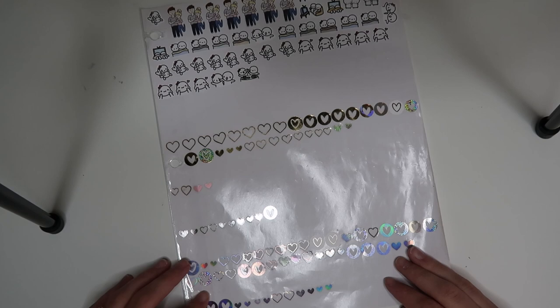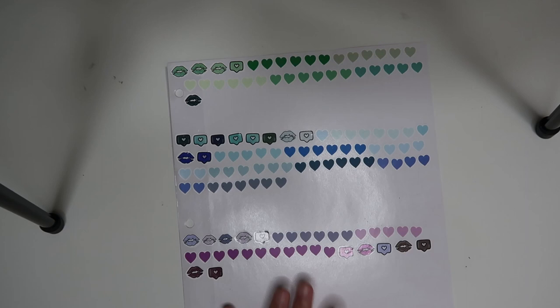The next category is couple. We have got characters here, then we've got foiled hearts. And then we've got red, orange, yellow, pink. I mostly have hearts and then a couple of lips for some stuff couple related. We've got green, blue, purple, brown, and gray.